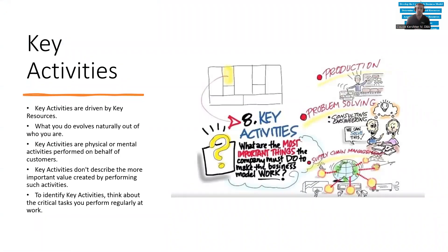Moving from key partners to key activities — a different section of the business model. This one is very straightforward with not too many nuances. These are things completely under the entrepreneur's, owner's, founder's, and executives' control. Key activities are derived by what we own and come from key resources — we can only provide activities with the resources we have. Key activities are physical and mental activities performed on behalf of customers. To identify key activities, think about the critical tasks that must be performed regularly to deliver value to customers.